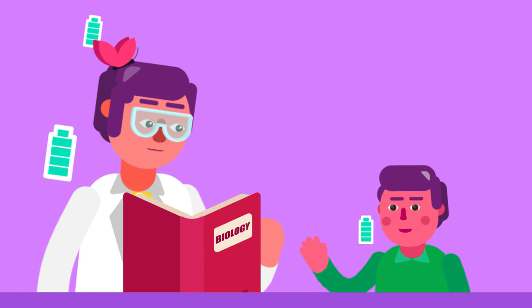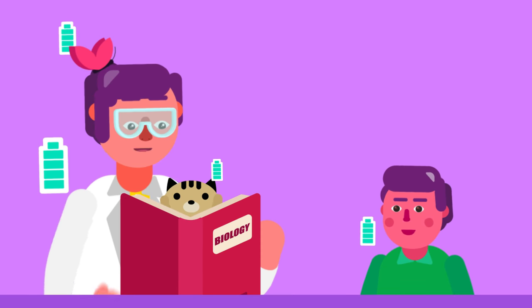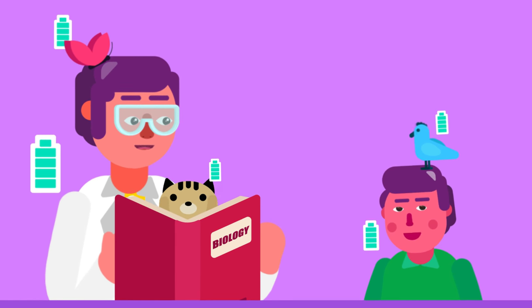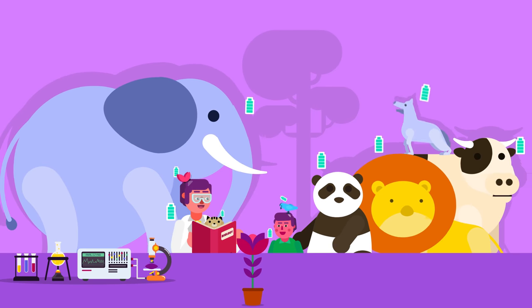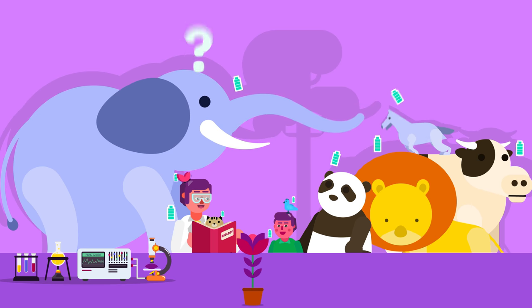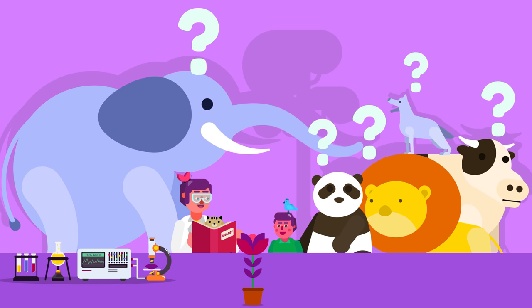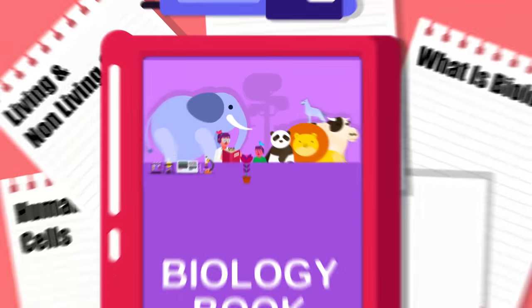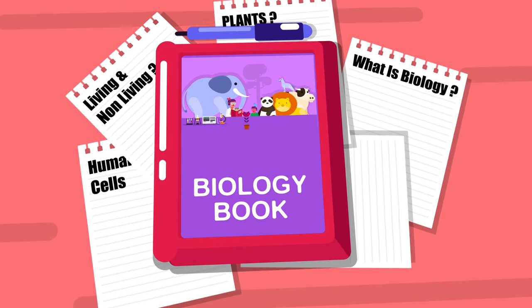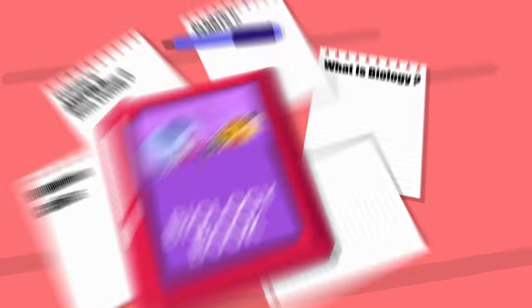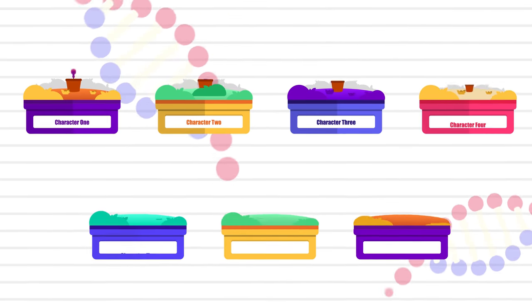For example, we humans eat food to get energy, feel and respond to our environment, and reproduce to make more of ourselves. Many other living things like insects, birds, and animals have the same properties, so they are all living organisms. Biology is the field which answers how many types of living things there are and how they differ from us.